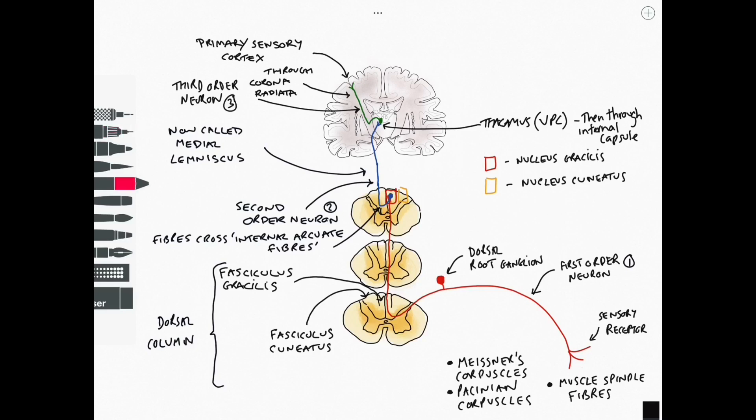so what happens then when we get information traveling in either the nucleus gracilis or the nucleus cuneatus well this is distinguished by the level at which that information arises if the information arises below the level of T6 the information travels within fasciculus gracilis if it travels above the level of T6 then it travels with fasciculus cuneatus